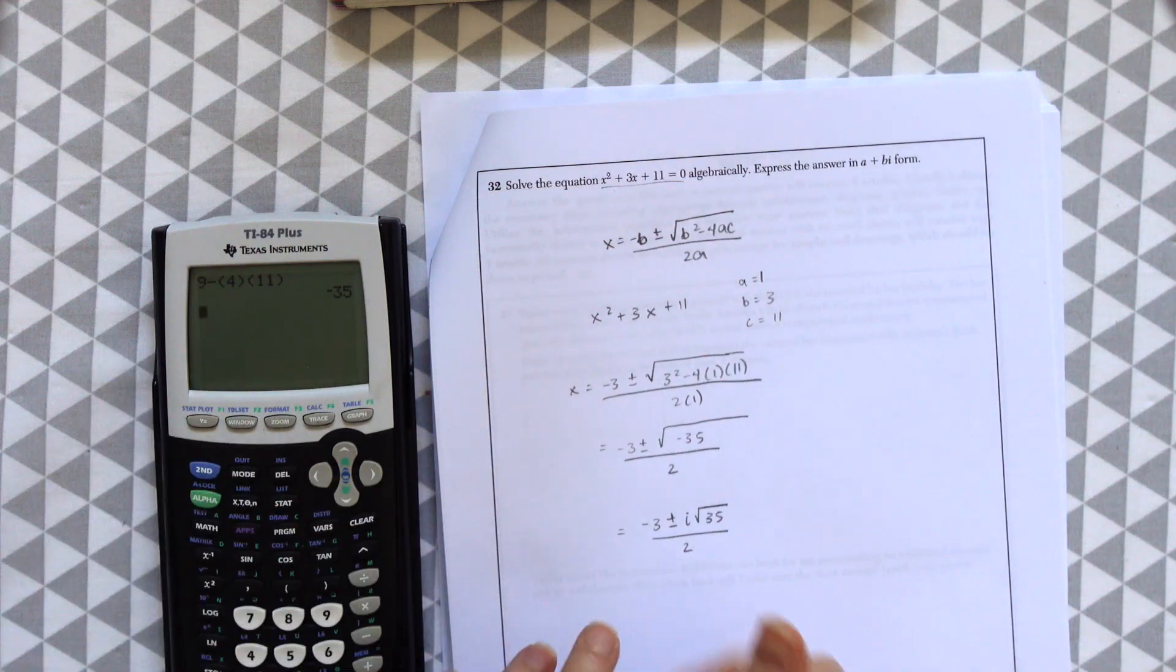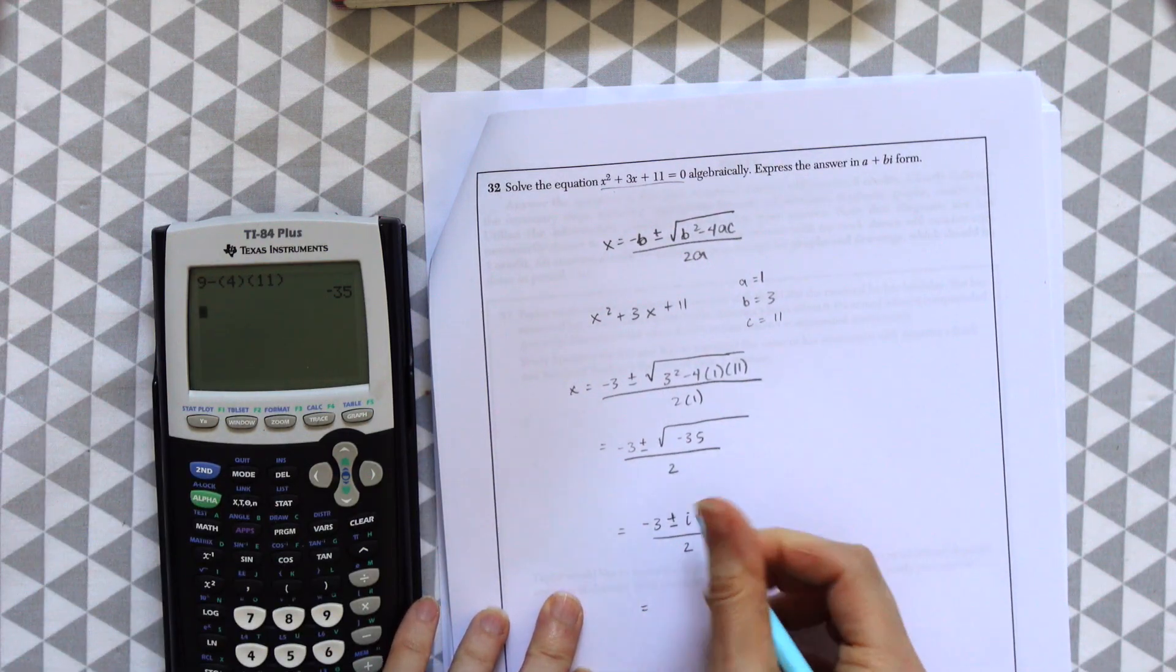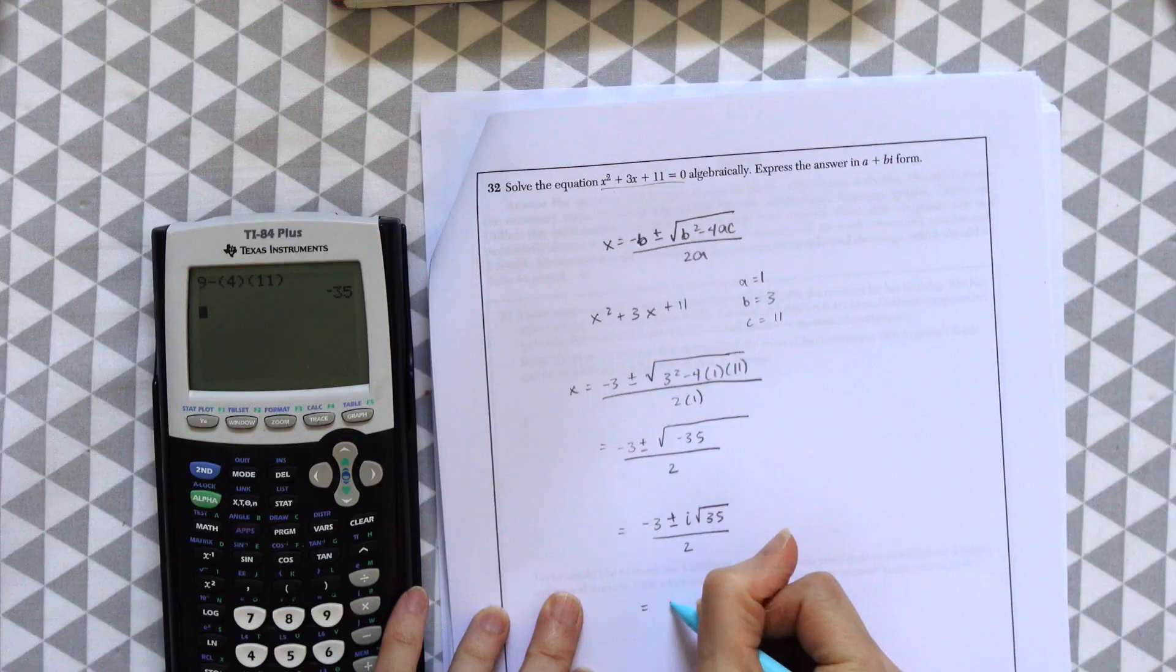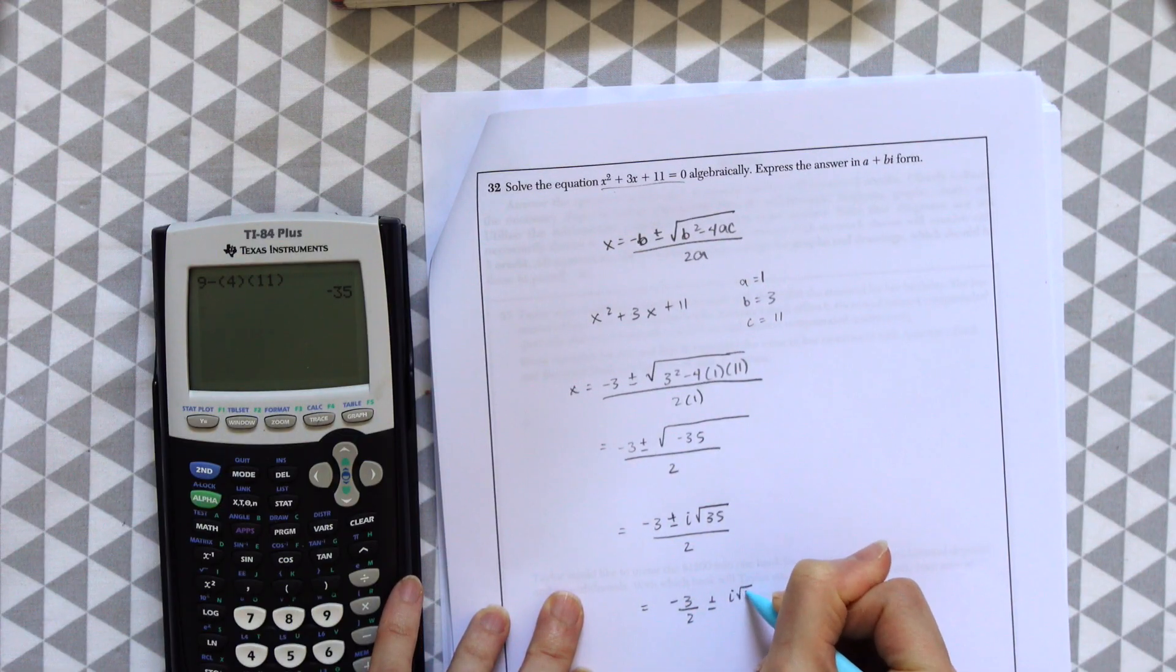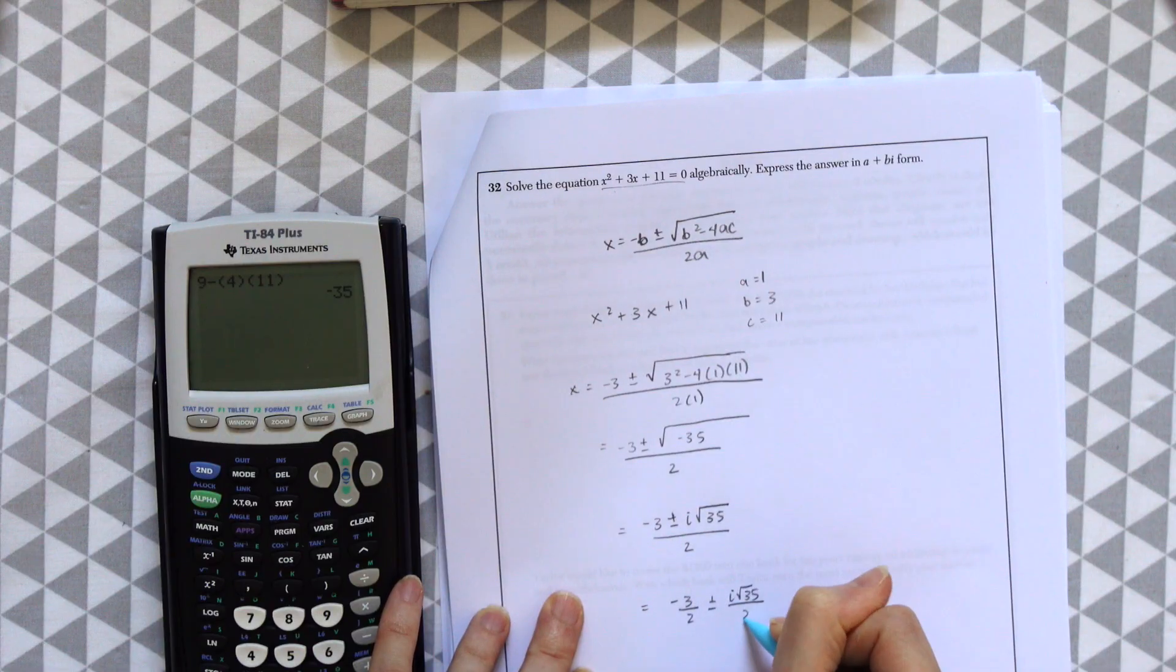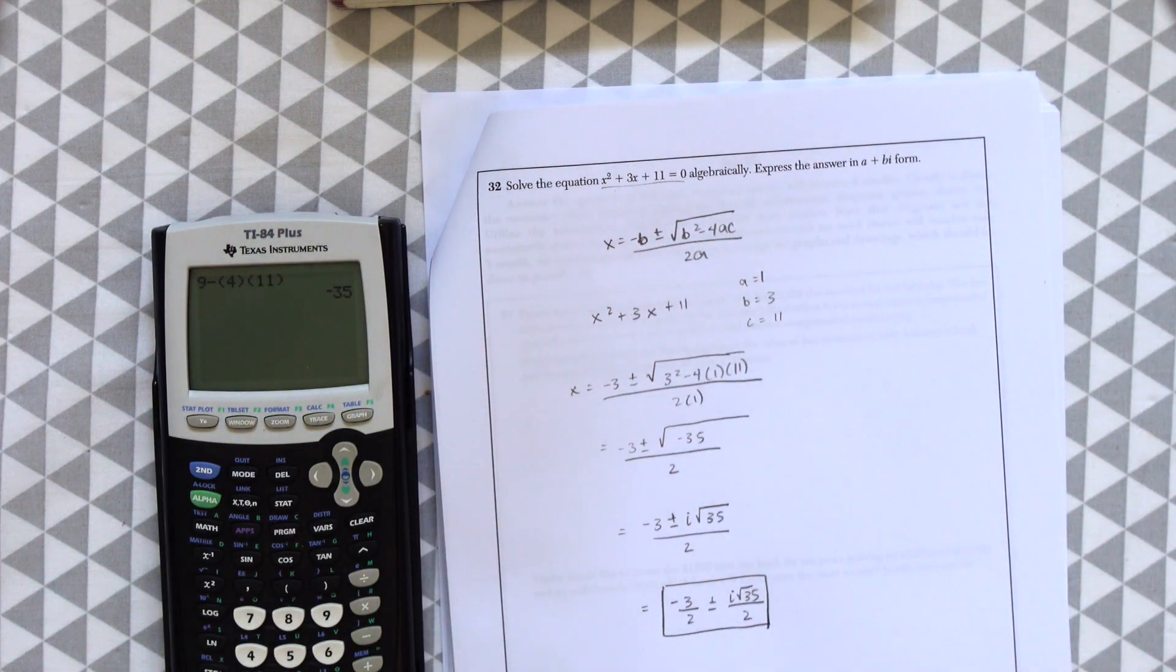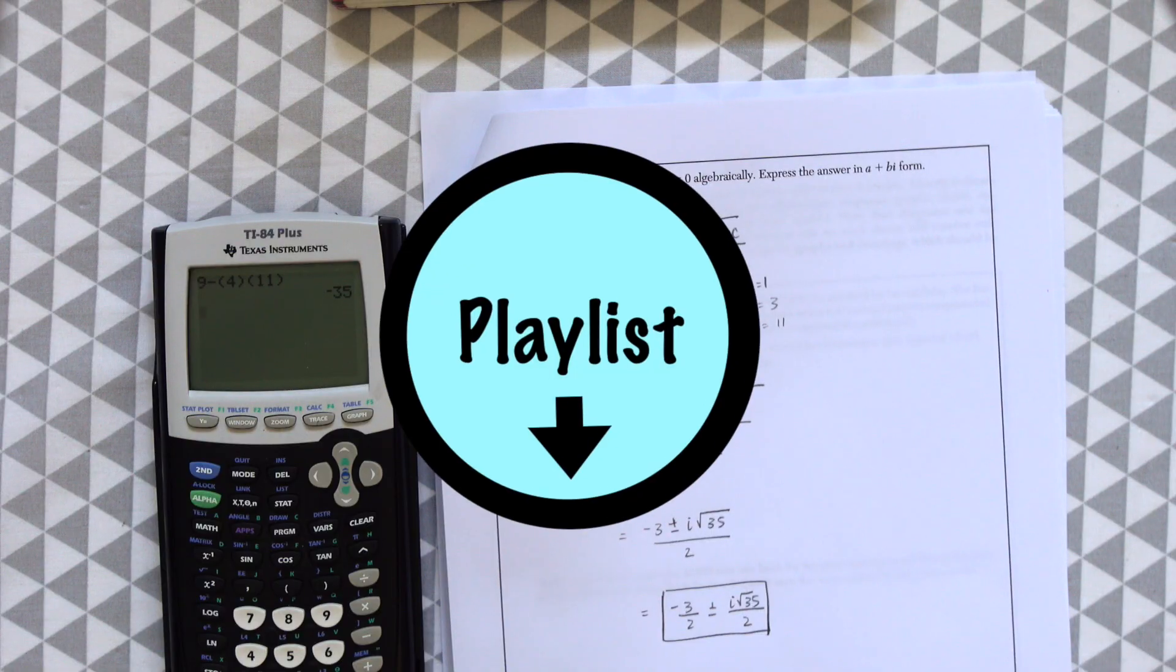And then this is all over 2. And then to just split this up a little bit more, we can move this denominator out. So we could have negative 3 halves plus or minus i radical 35 over 2.